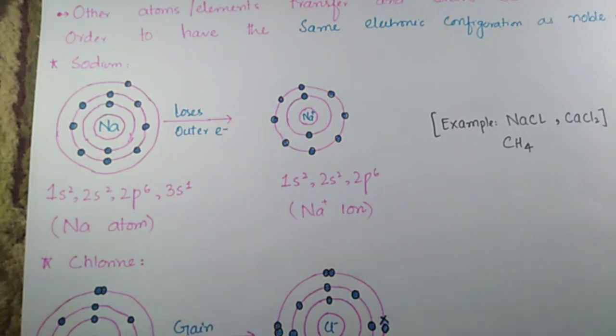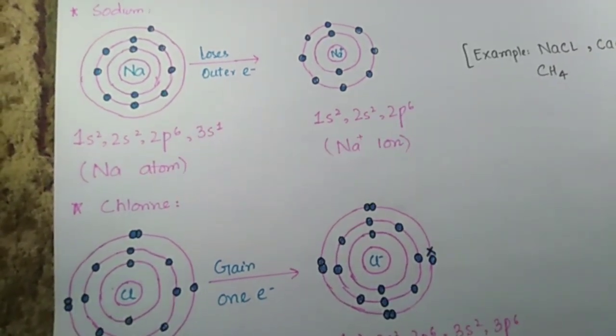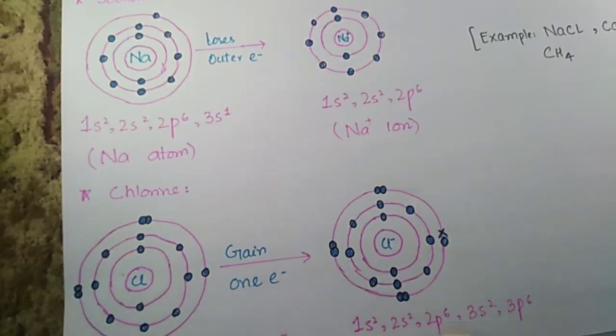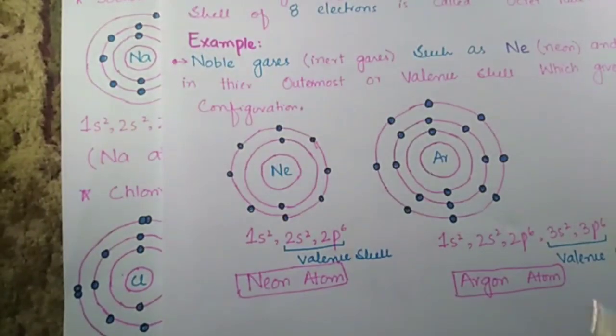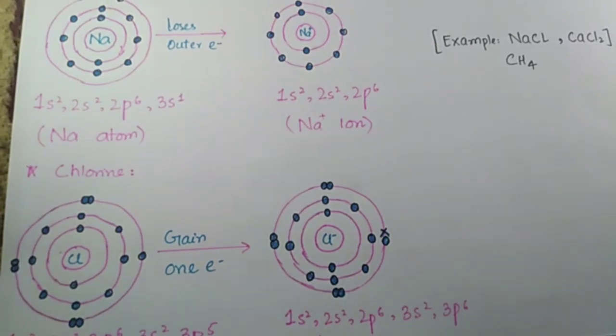Similarly, if we look at chlorine, it has atomic number 17, which means two in the innermost, eight in the second, and the last valence shell has seven. It needs one more electron to complete its octet. So it gains an electron and completes its octet. When we look at the electronic configuration of chlorine ion, it is very similar to that of argon, the noble gas, which means it's stable now. This is how ionic bond formation occurs, like in NaCl. Complete transfer occurs: sodium's octet complete, chlorine's octet complete, a very stable compound. Similarly, CaCl₂ is another example.